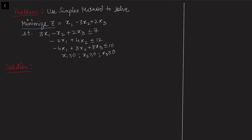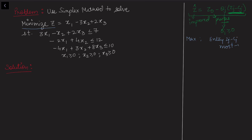There are two ways to handle this minimization problem. Recalling from the previous video, z-hat is the improved value related to the previous value z-naught by: z-hat = z-naught minus theta_j times (z_j minus c_j). Theta_j is the minimum ratio and is always non-negative, so z-hat depends only on z_j minus c_j. For minimization, we enter z_j minus c_j with the most positive value, so z-hat will be less than or equal to z-naught, addressing the minimization problem.